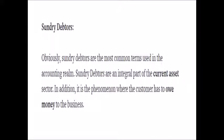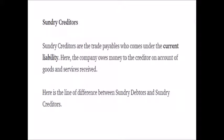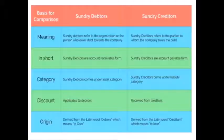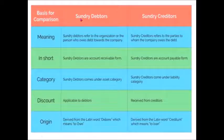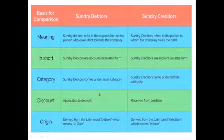Sundry Debtors, by definition, are equal to current assets. Sundry Creditors are equal to current liability. Sundry Creditors are the amount. Sundry Debtors are the amount. Sundry Creditors are the account payable form. Sundry Debtors are the account receivable form and are the amount of assets.